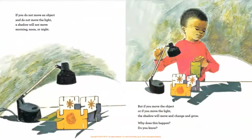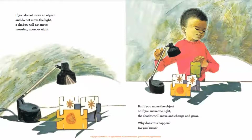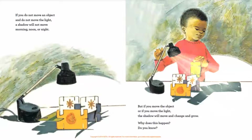If you do not move an object and do not move the light, a shadow will not move — morning, noon, or night. But if you move the object or if you move the light, the shadow will move and change and grow. Why does this happen? Do you know?